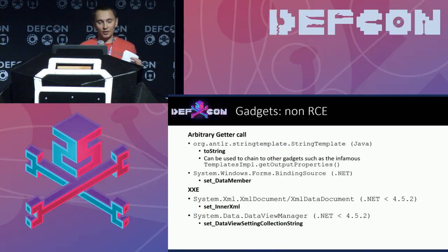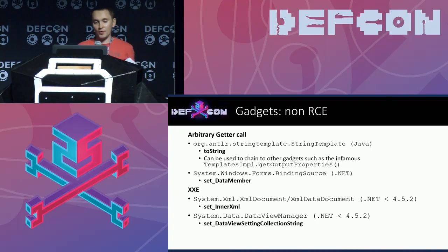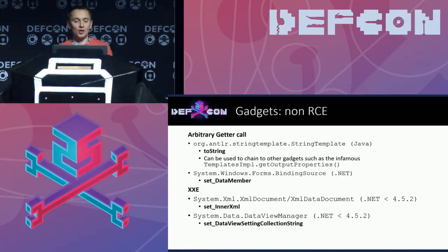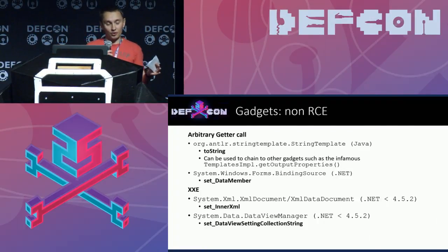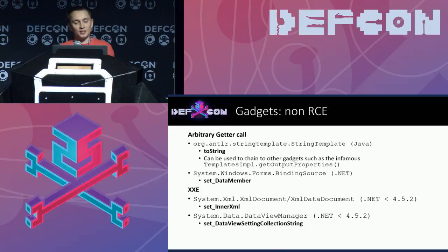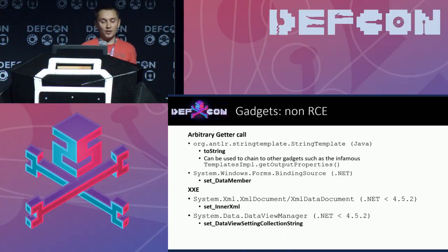Apart from gadgets that allow code execution by themselves, we have a couple of other interesting gadgets. Some can be used as building blocks for gadget chains, like BindingSource.setDataMember in .NET or StringTemplate.toString in Java — usable for arbitrary getter calls. Others can trigger non-RCE attacks: for example, innerXml in XmlDataDocument, or the setter of DataViewSetting collections in DataViewManager, can be used for XML external entity attacks in some versions of the .NET framework.